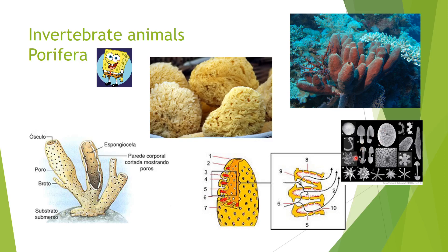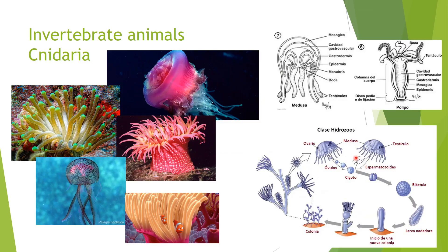The other group we're going to see today are the cnidarians. Cnidarians basically have two forms: the jellyfish — medusa in Spanish — and the polyp — pólipo in Spanish. You've got it in the book as well. They are called cnidaria because they have a special type of cell called the cnidoblast. These are stinging cells, and that's why when we touch a jellyfish or a polyp like an anemone, we get stings.